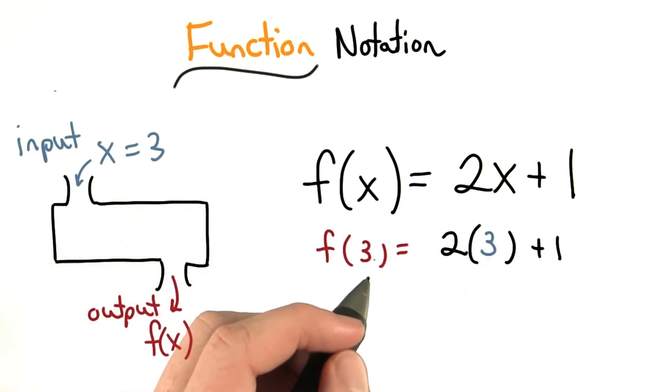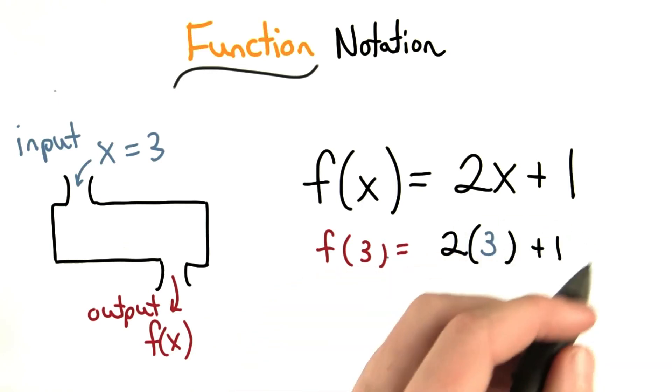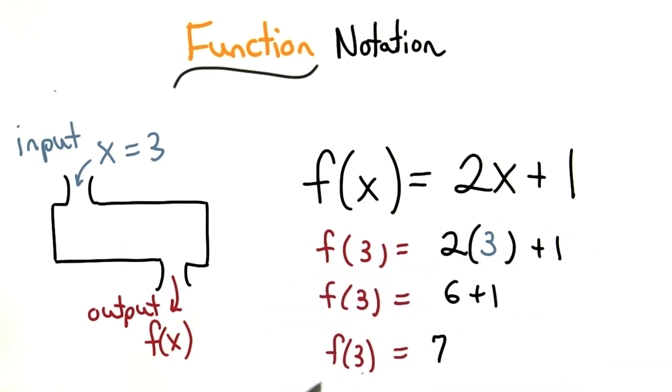I want to find the output, or f of 3, by carrying out this math. So here, the output when x is 3 is 7.